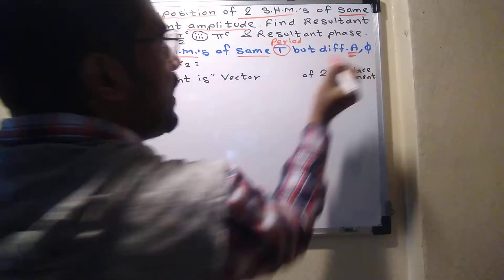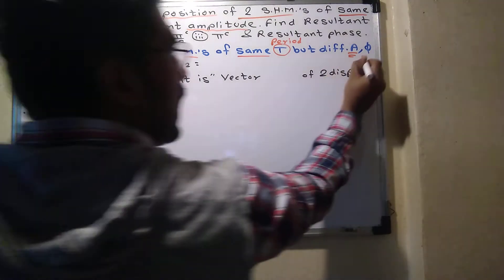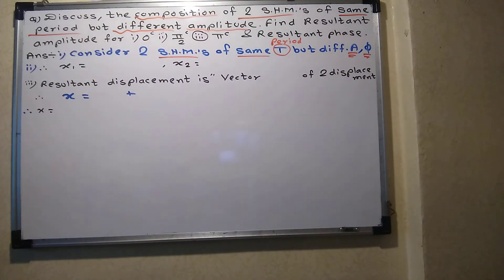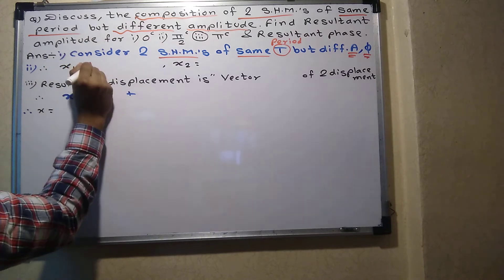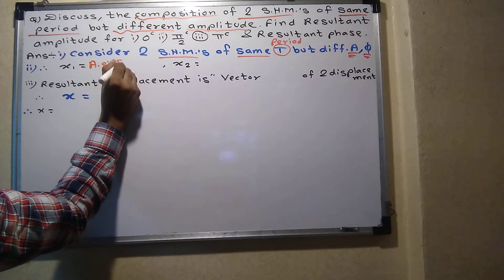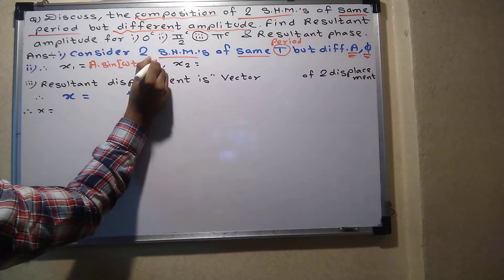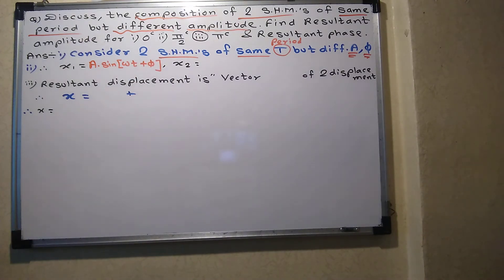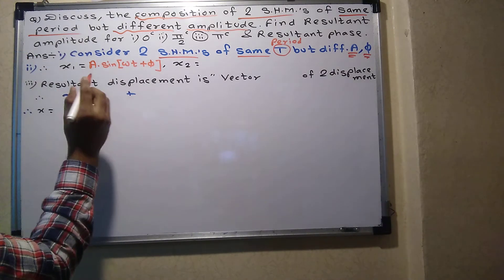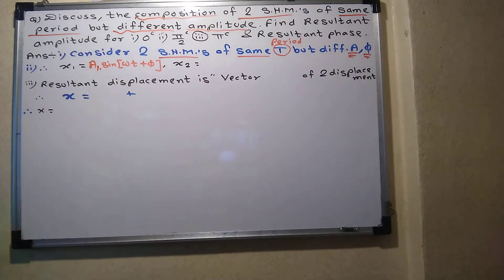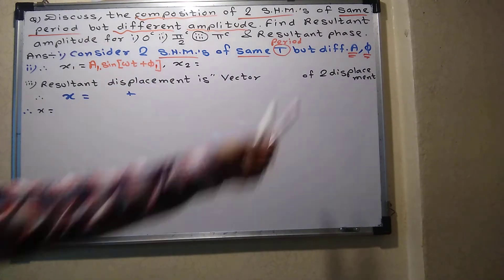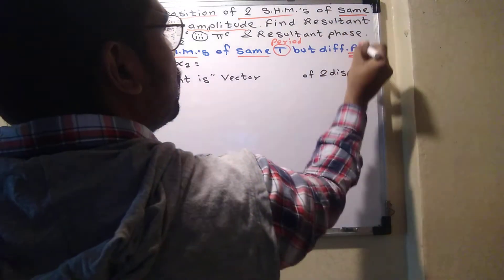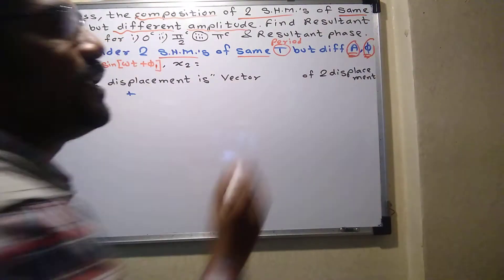They have different amplitude a and different phase φ. The general formula for any SHM, which we derived last time, is x = a·sin(ωt + φ). This is the general equation of any SHM. We consider different amplitudes, so for the first SHM I use amplitude a1, with suffix 1, and different phase φ1.